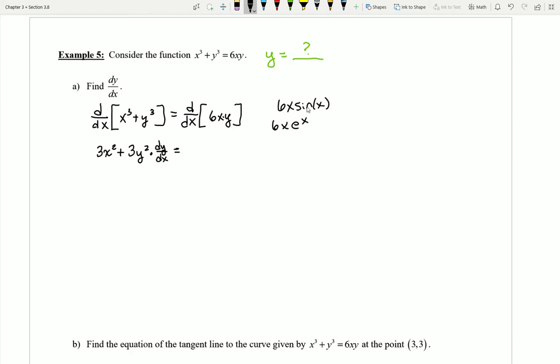So I should recognize here that what I really need to use is a product rule on this side because I have kind of two different functions. I have a 6x, which I'll group together as one thing, and I have a y. So I'm gonna use product rule here.